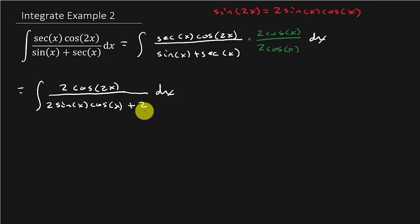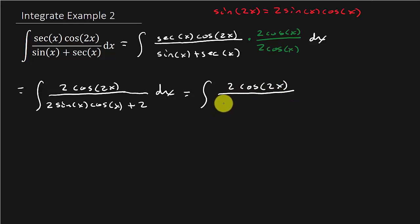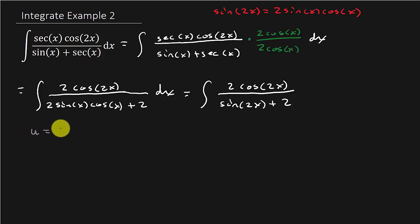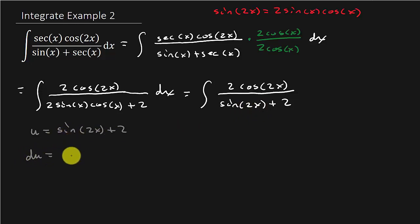So what do we do now? This is equal to 2 cosine 2x over — now I'm going to let sine 2x plus 2 be in the denominator. Let's make our u-substitution. I'm going to let u equal sine 2x plus 2. So du — the derivative of sine is cosine, times the derivative of what we're taking the sine of, which is 2. And the derivative of the constant 2 is just 0. So du equals 2 cosine 2x dx.